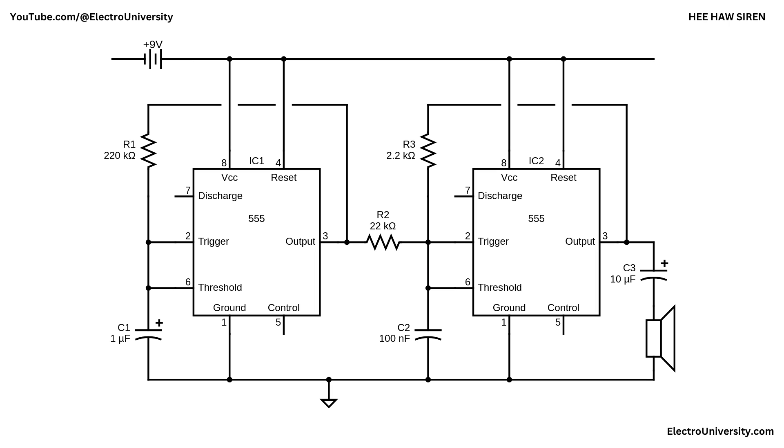The second 555 timer is configured as a high frequency oscillator responsible for producing the audible tone. It uses a 2200 ohm resistor and a 100 nanofarad capacitor to set the frequency range. When modulated by the first 555 output, the frequency of the second 555 varies, creating the rising and falling Hee Haw siren effect.